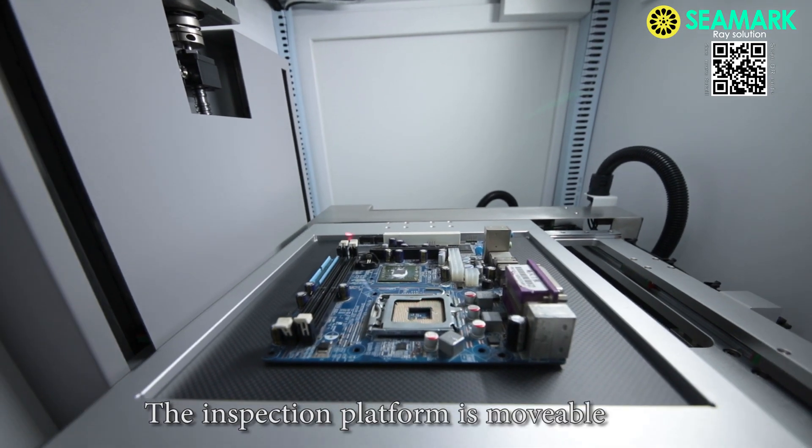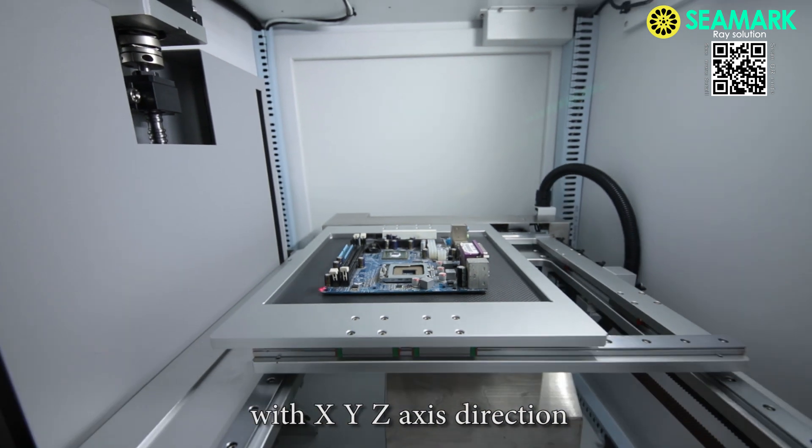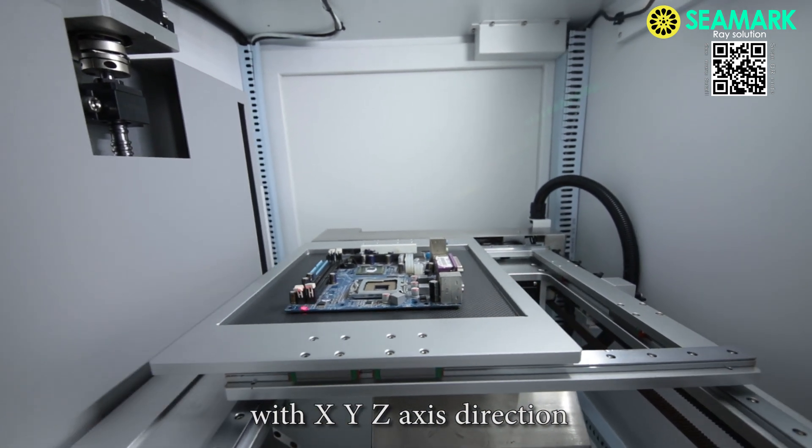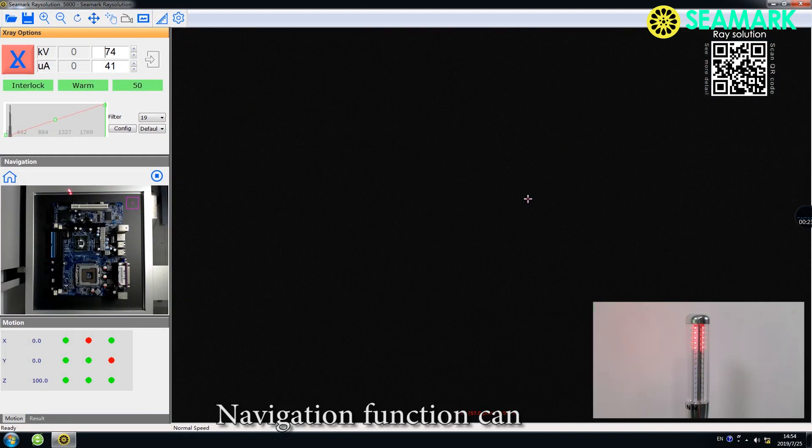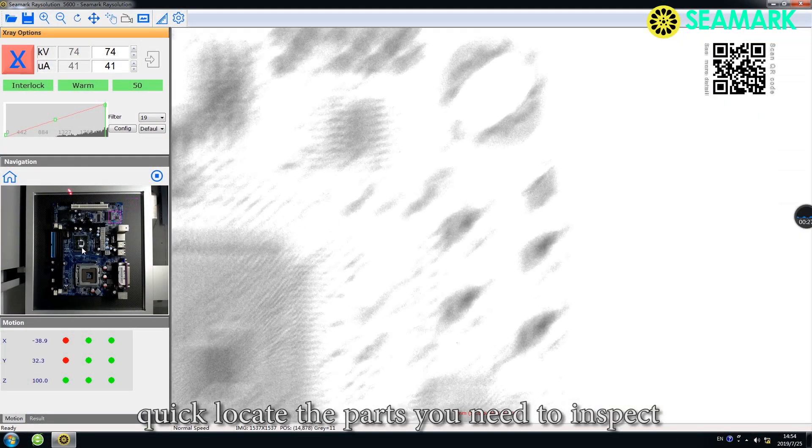The inspection platform is movable with X, Y, Z axis direction. Navigation function can quickly locate the parts you need to inspect.